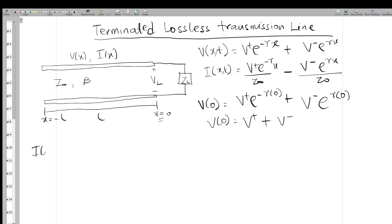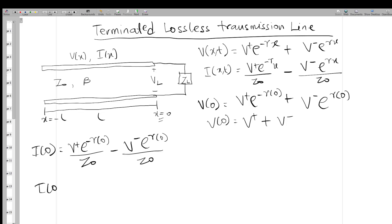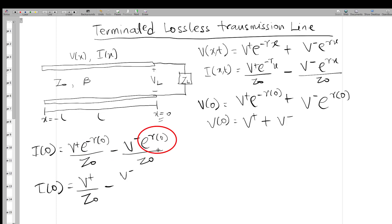Now for the current at x = 0: I(0) = V+ e^(-γx) / Z₀ minus V- e^(+γx) / Z₀, with x = 0. Both exponential terms evaluate to 1, so I(0) = (V+ - V-) / Z₀.